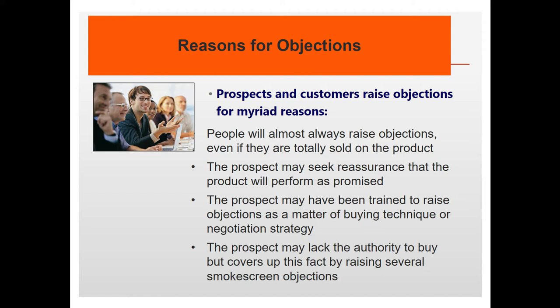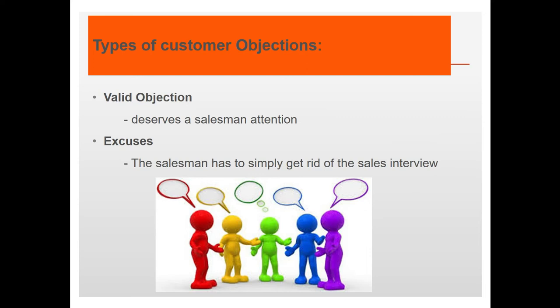People will almost always raise objections even if they are totally sold on the product — because they want reassurance that the product will perform as promised. The prospect may have been trained to raise objections, especially lawyers, as a buying technique or negotiation strategy. Another reason is that the prospect may lack the authority to buy but covers it up with smokescreen objections.